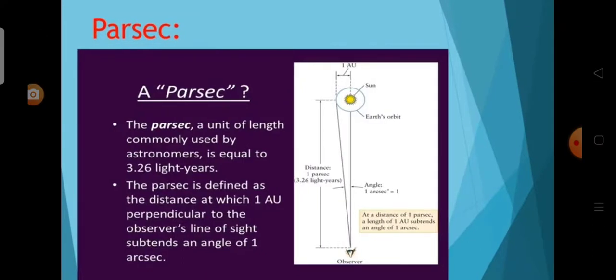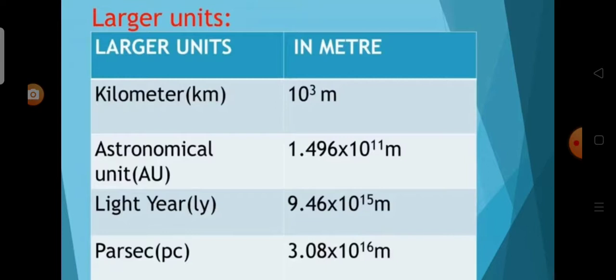And the last one is parsec. What is parsec? The parsec is defined as the distance at which one astronomical unit perpendicular to the observer's line of sight subtends an angle of one arcsec. The parsec is a unit of length commonly used by astronomers, equal to 3.26 light years. Kilometre, astronomical unit, light year, and parsec are the larger units.